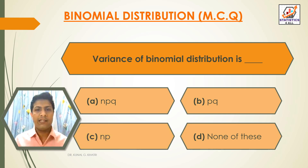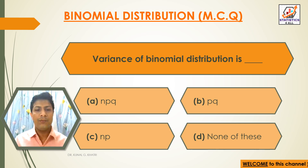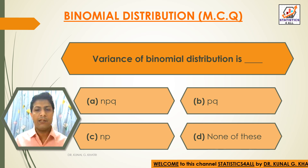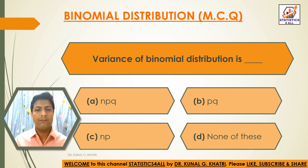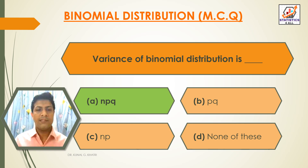Next question: Variance of binomial distribution is dash. Option A: npq. Option B: pq. Option C: np. Option D: None of these. The answer is option A — npq. Variance of binomial distribution is npq.